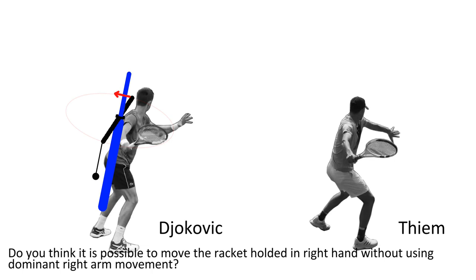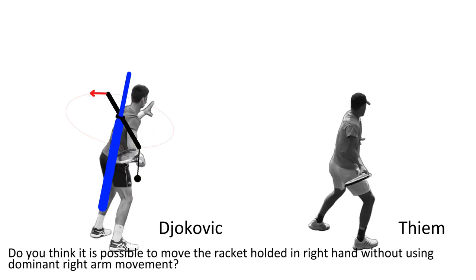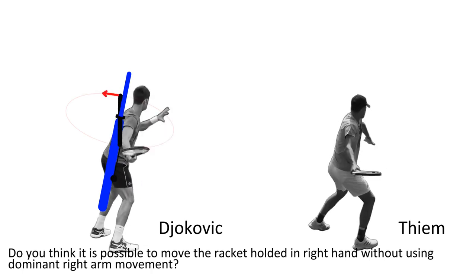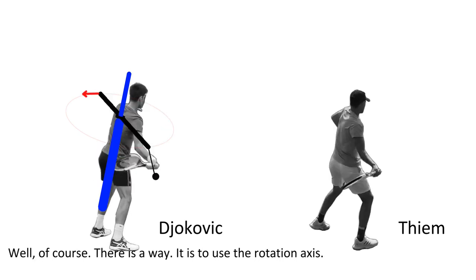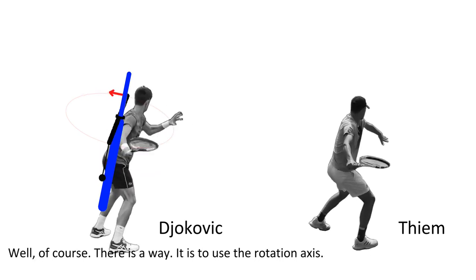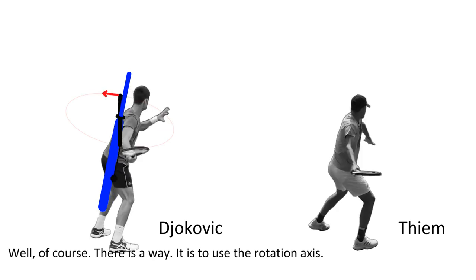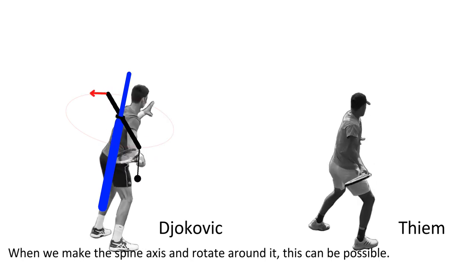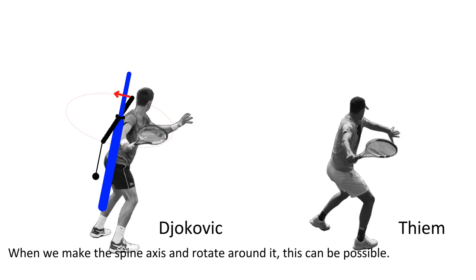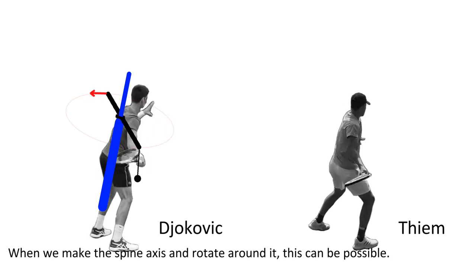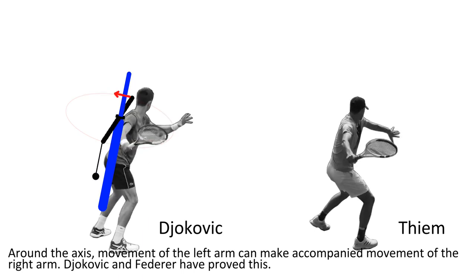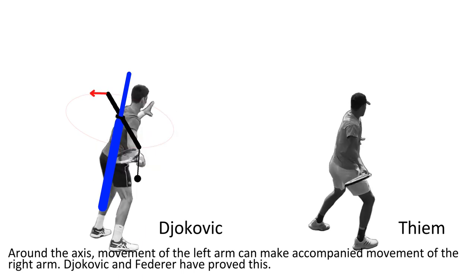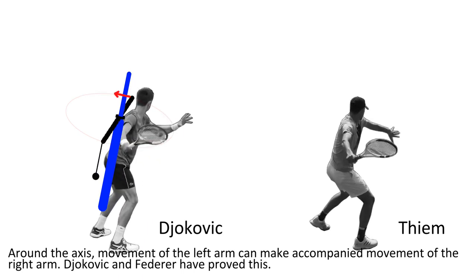Do you think it is possible to move the racket held in the right hand without using dominant right-arm movement? Well, of course, there is a way. It is to use the rotation axis. When you make the spine axis and rotate around it, this can be possible. Around the axis, movement of the left arm can be accompanied by movement of the right arm. Chokovic and Federer have proved this.